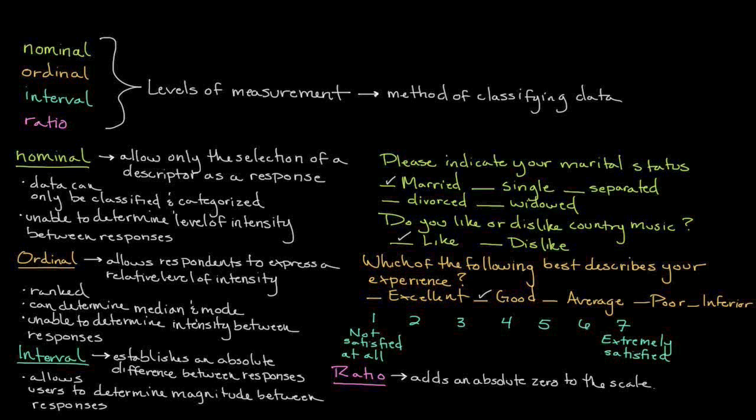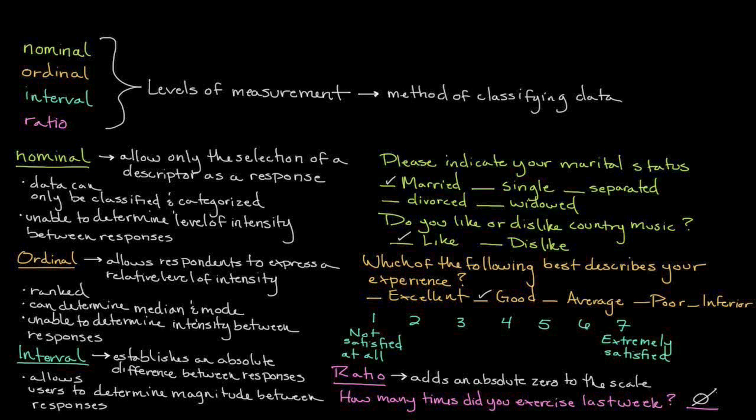For example, a question asking respondents how many times they exercised during the past seven days is a ratio scale. In addition to being able to provide a numerical value, respondents can also list zero as their response. This zero has a great deal of significance, as it indicates they did not exercise at all during a seven-day period. Furthermore, we know that someone who exercised twice in a seven-day period was twice as active as someone who exercised once.